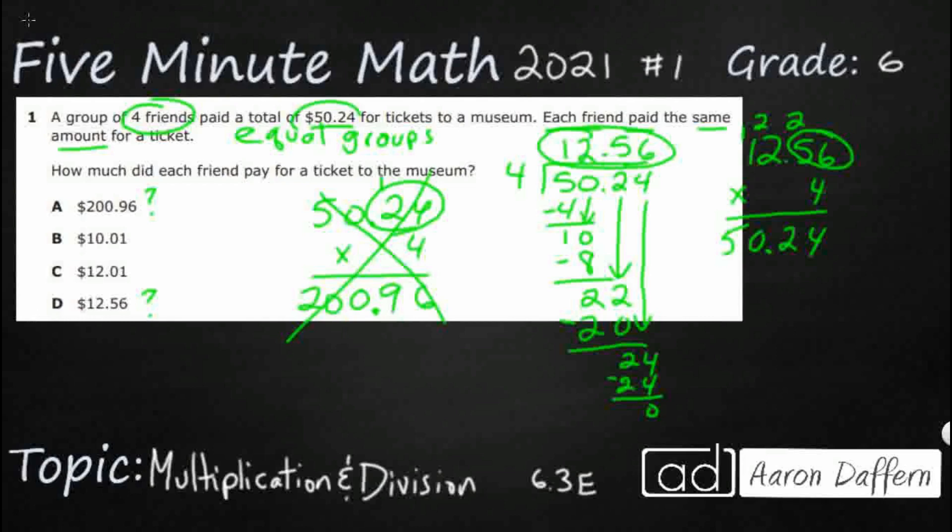They paid a total of $50.24. So what we have is $50.24, that's my total. And we already know there are four friends, so I'm just going to put these into four friends right here. So I've got four different friends.